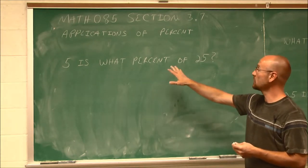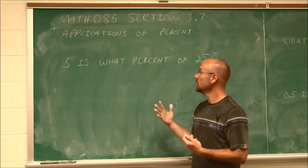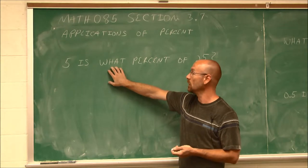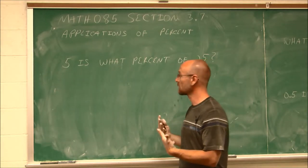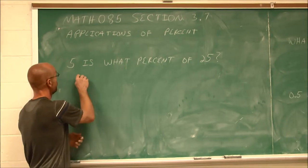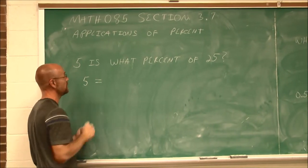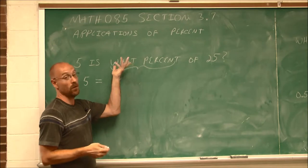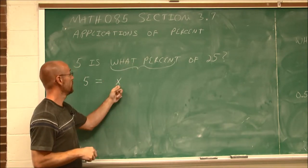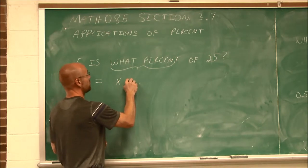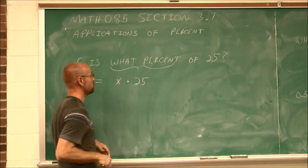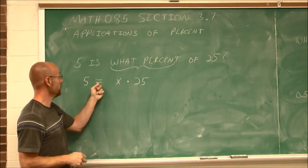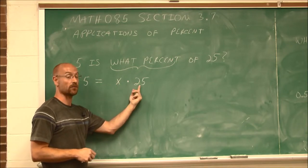So here we have 5 is what percent of 25? Well, when it comes to the English language, what is our variable? It's asking the question. This is what we don't know. So if I want to convert this, we're going to begin now. If I say 5 is, is I translate to equals. 5 is what percent? Well, let's call this my unknown. I want to know what percent, but I don't know as of yet. Of 25. Of tells me to multiply by 25. So I translated this into an algebraic equation. 5 is what percent of 25? Direct translation.